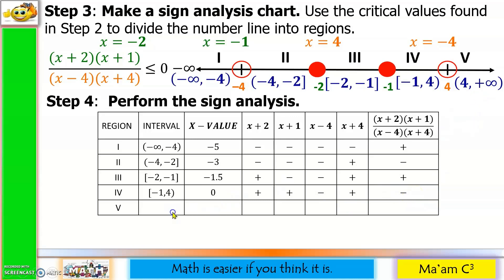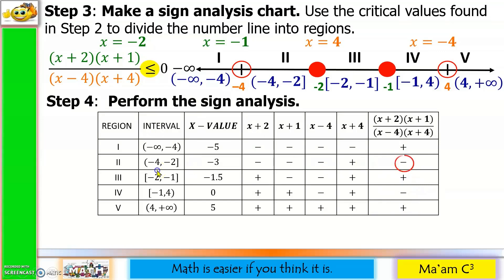Region 5, interval 4 to positive infinity: assign x equals 5. 5 plus 2 is positive; 5 plus 1 is positive; 5 minus 4 is positive; 5 plus 4 is positive. There are no negatives, therefore the sign is positive. Since our inequality is less than or equal to 0, we choose the regions with negative signs in the last column — that is region 2 and region 4.